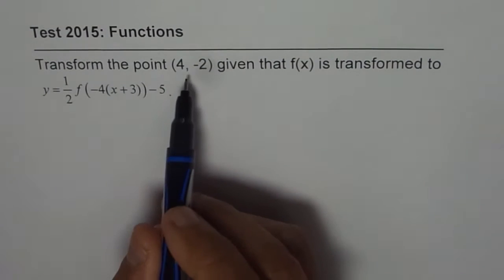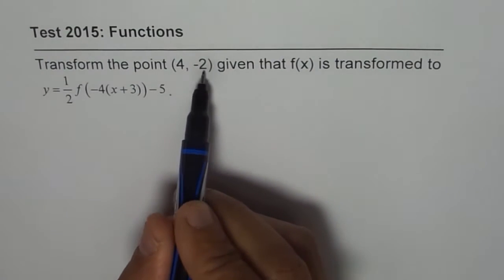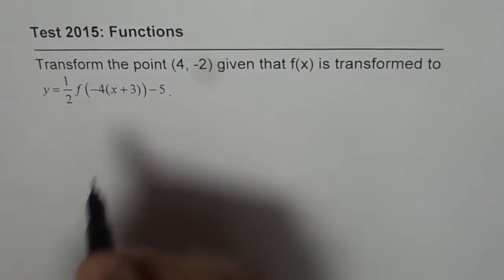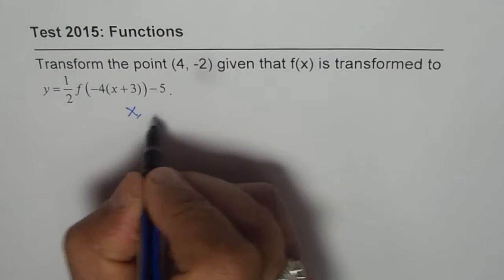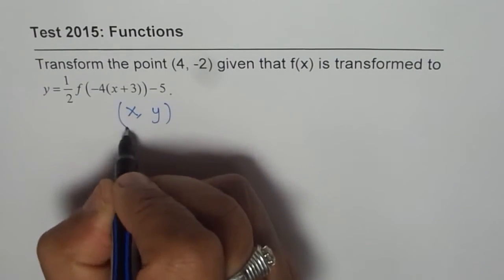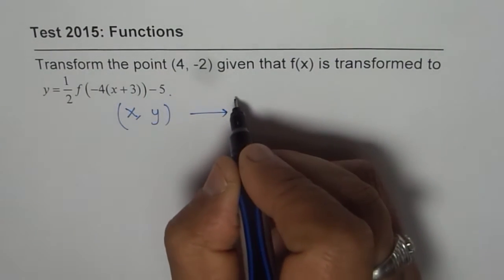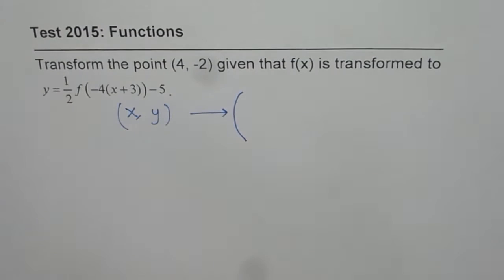Now how will you find the image of the point (4, -2)? Since we know that the function has been transformed, every coordinate point on the function will now get transformed and its image should have what coordinates? Let's figure that out.